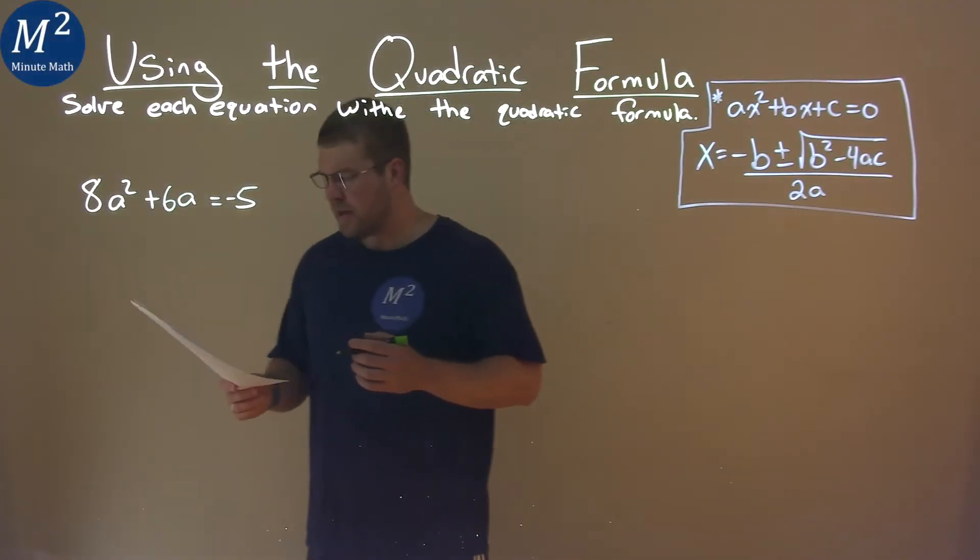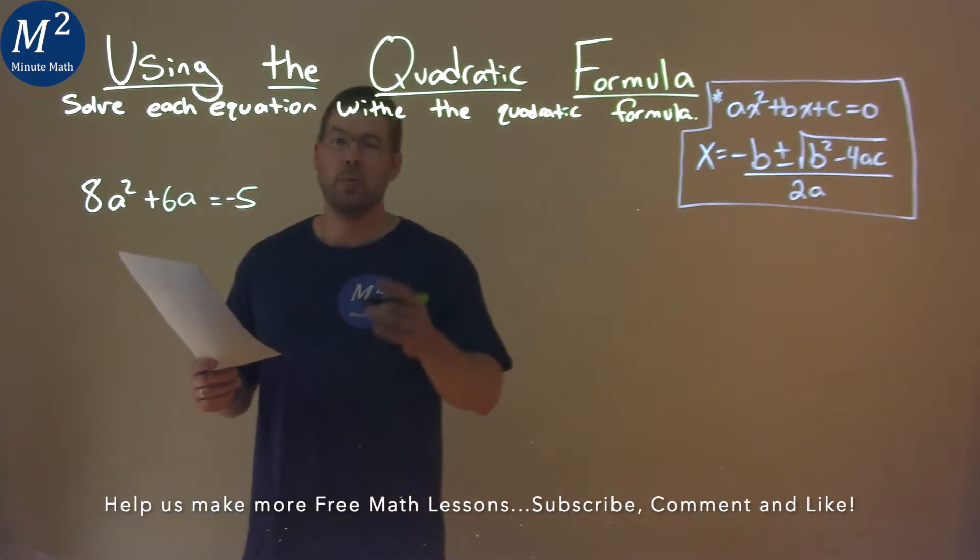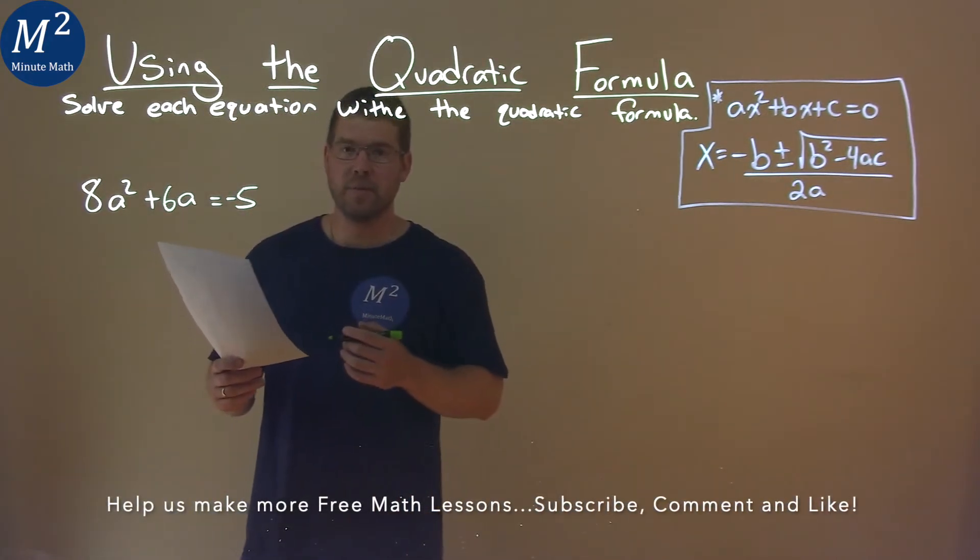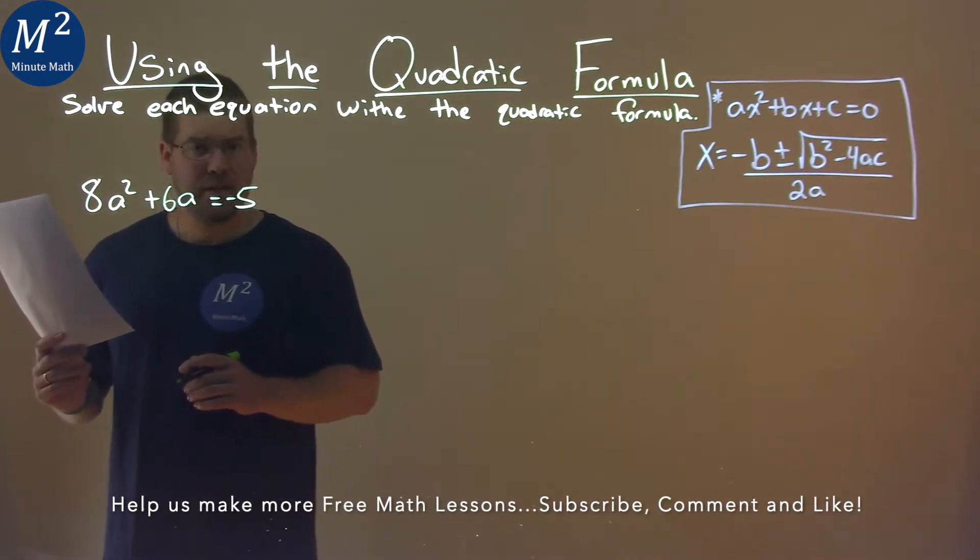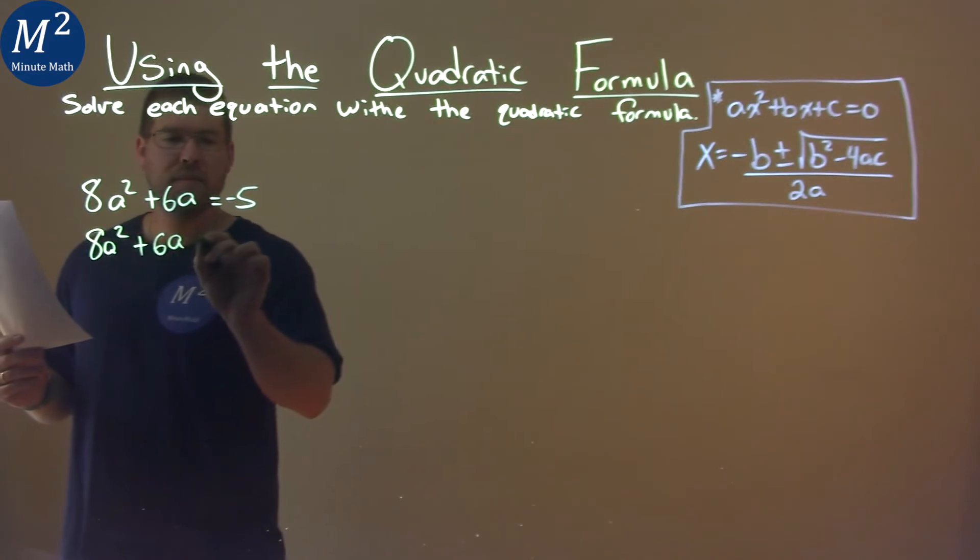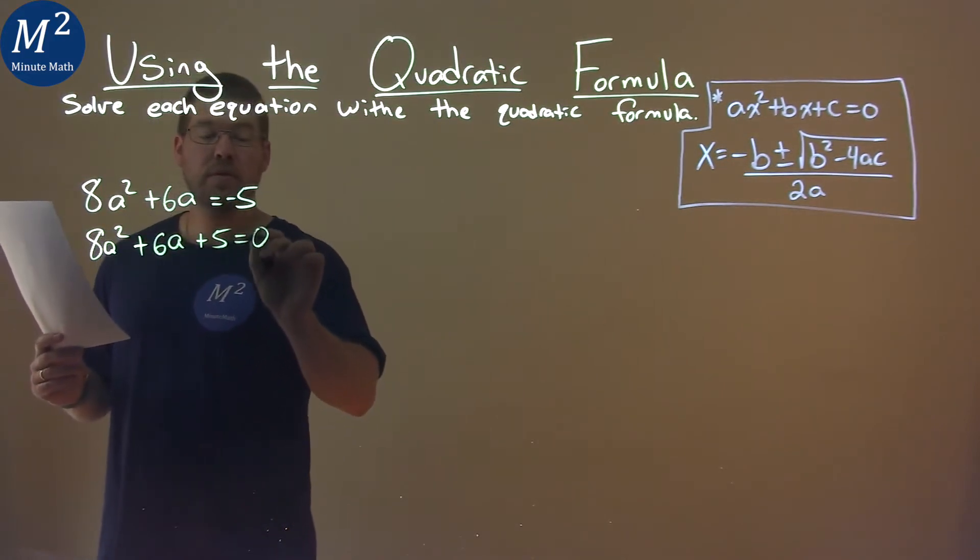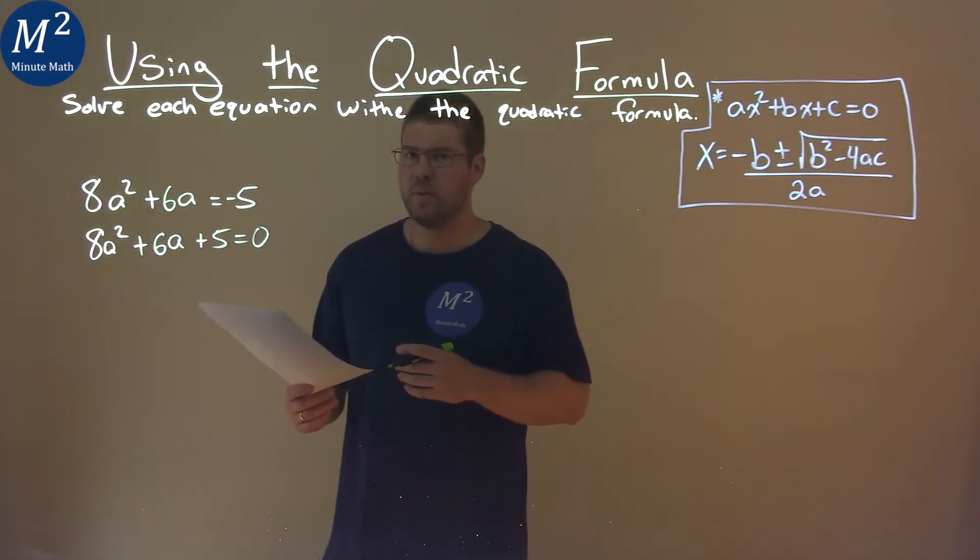We're given this problem right here. 8a squared plus 6a equals negative 5 and we need to solve this using the quadratic formula. First thing I want to do is bring the 5 over to the left hand side. We have 8a squared plus 6a plus 5 now equals 0. The point of that is we want our equation equal to 0 to use the quadratic formula.